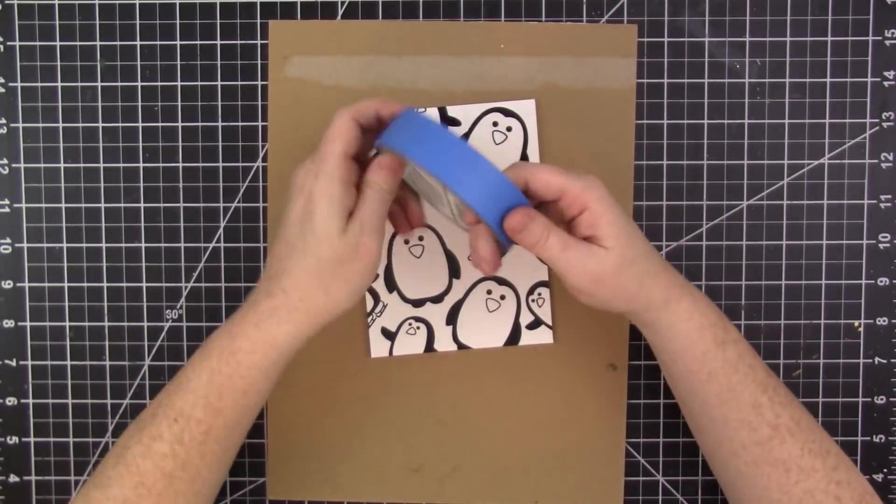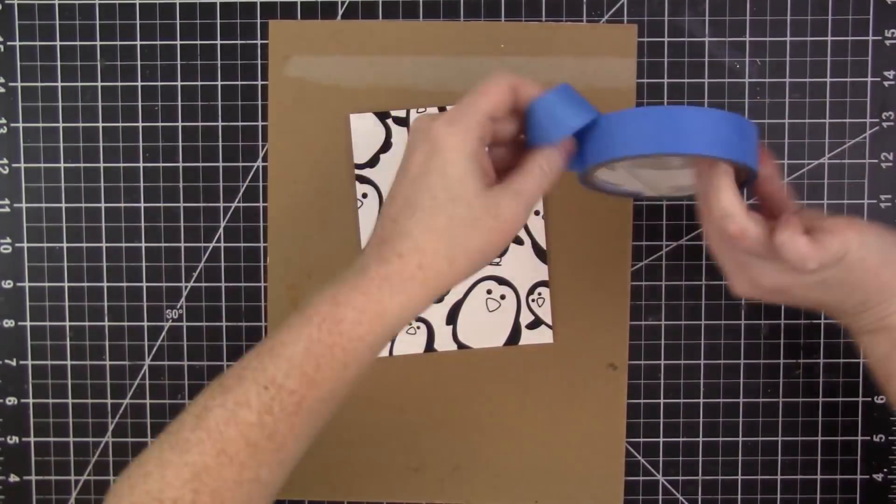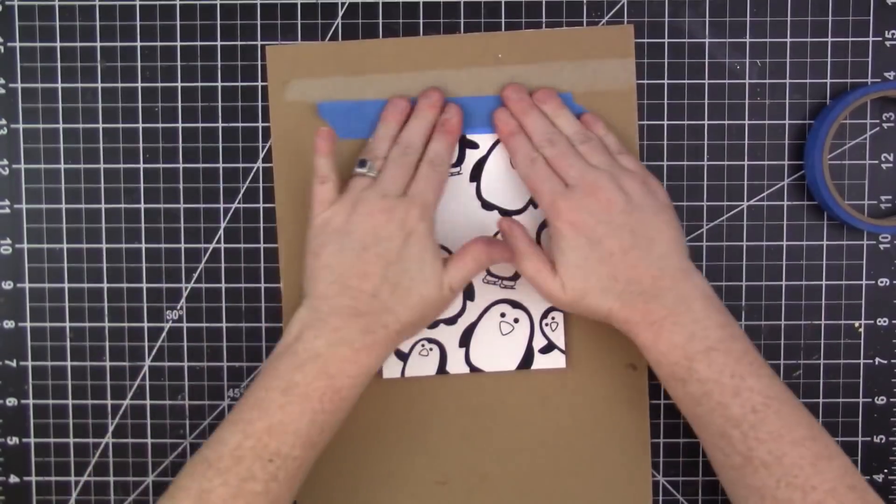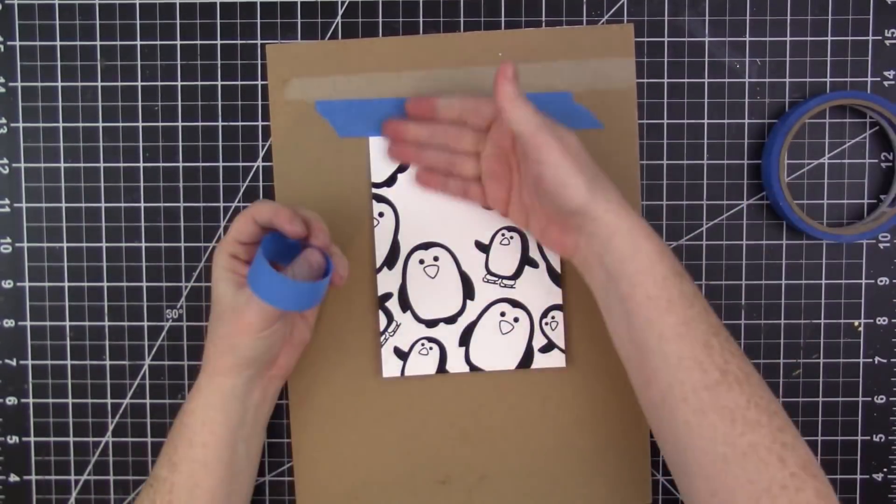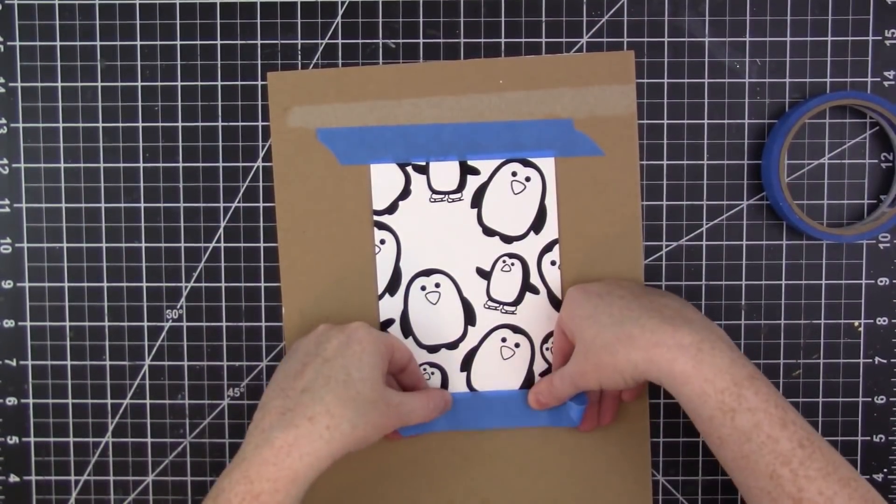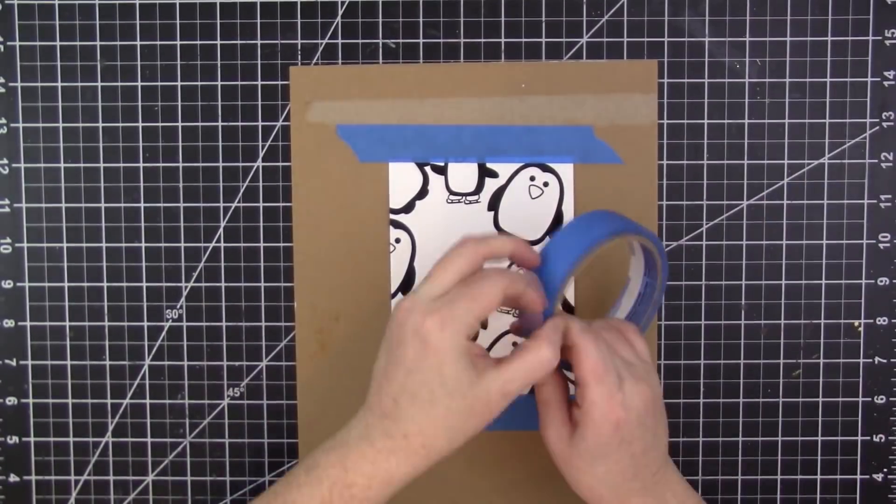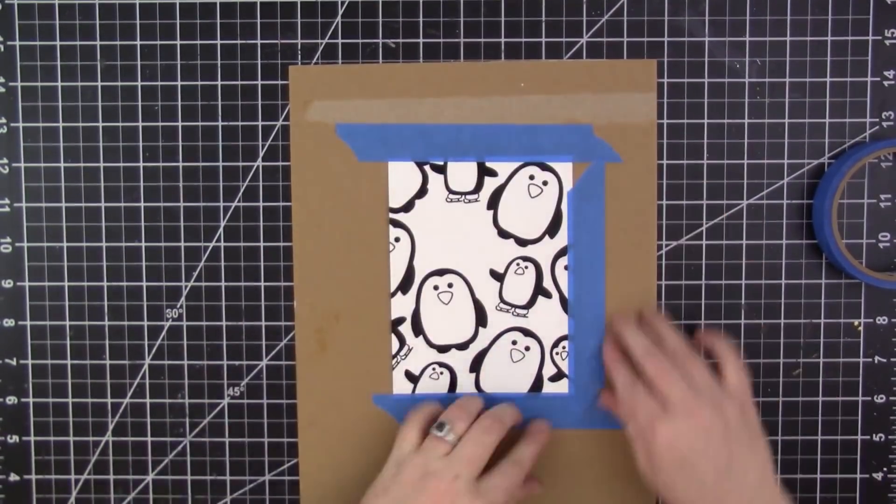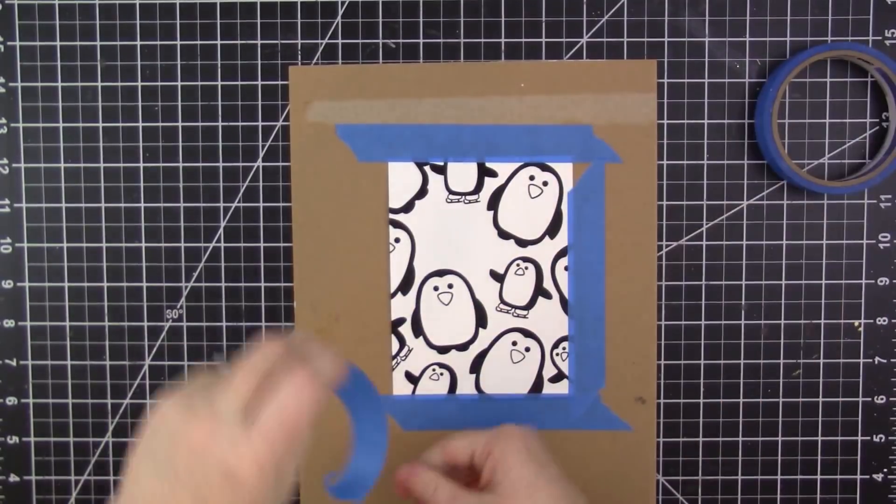So I'm going to be watercoloring in this project and I want the card panel to remain flat while I'm coloring it, so I'm going to tape it to a hardboard. This is just the hardboard that comes at the end of a paper pad, and I tape it down along the edges with some blue painter's tape which is going to be easy to remove after it's dry.